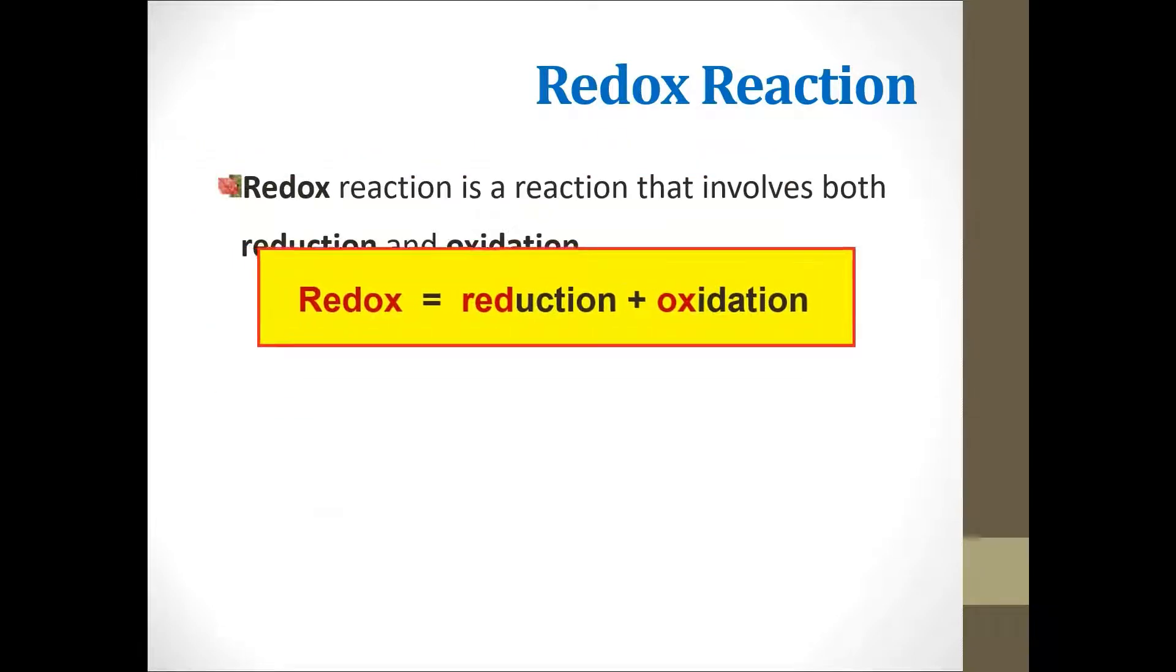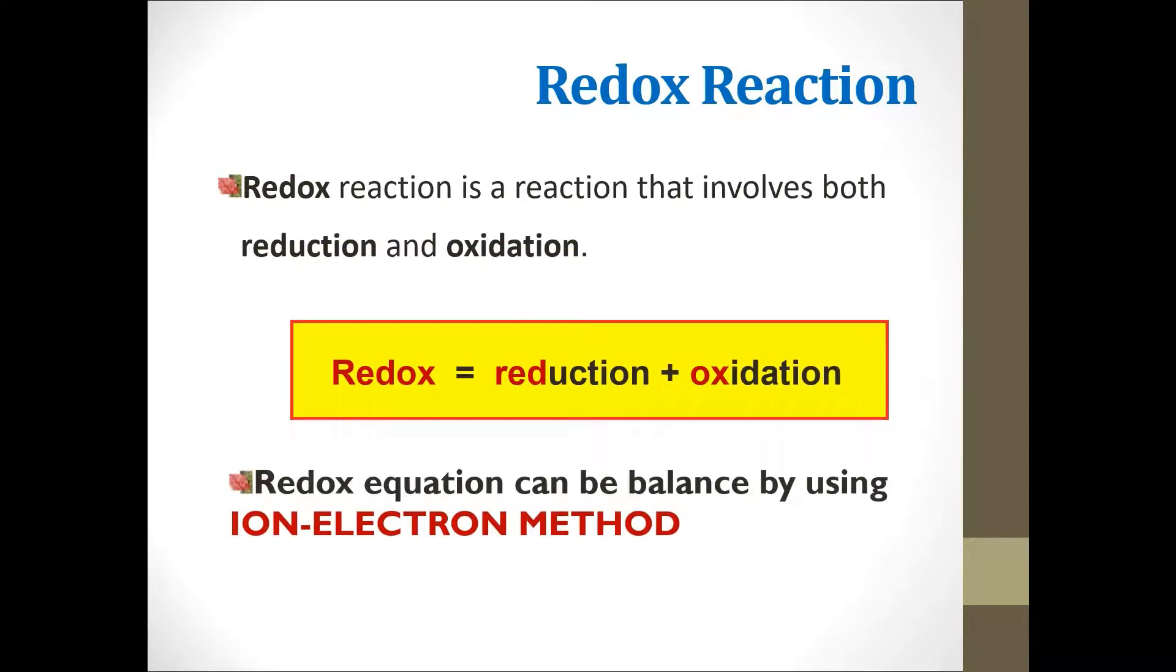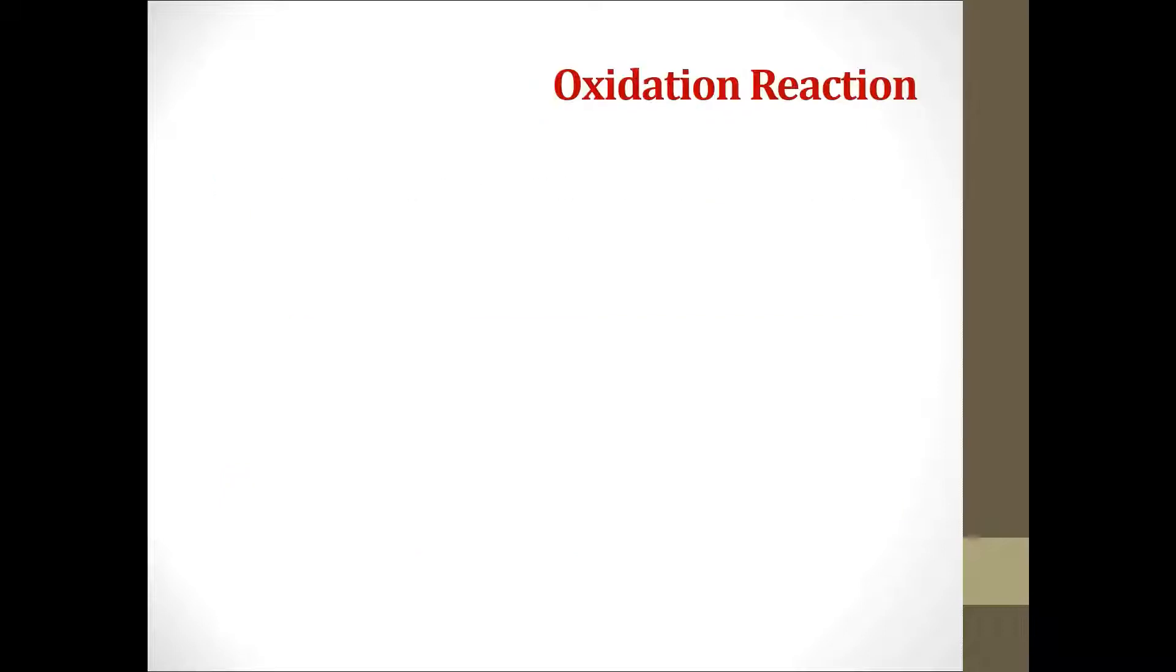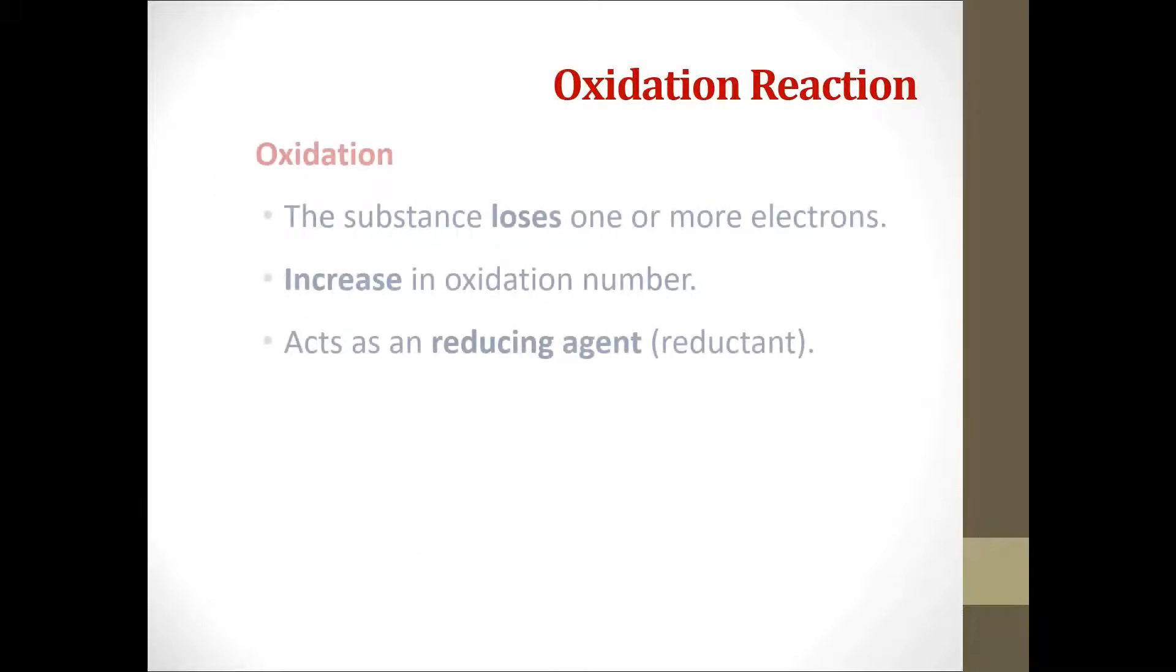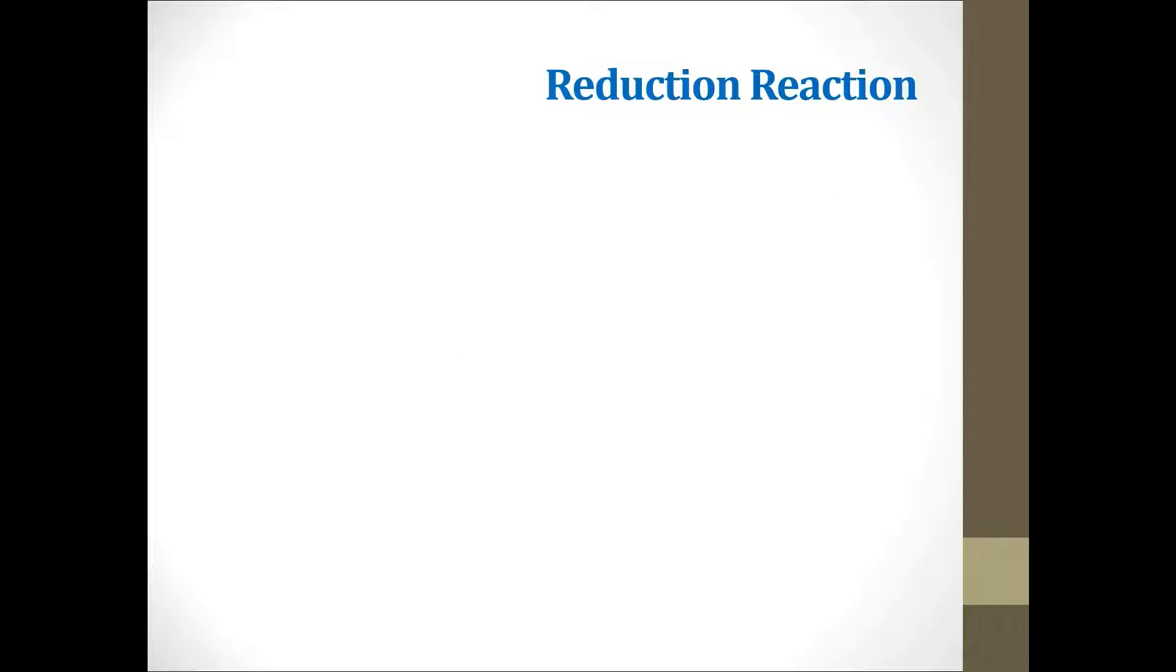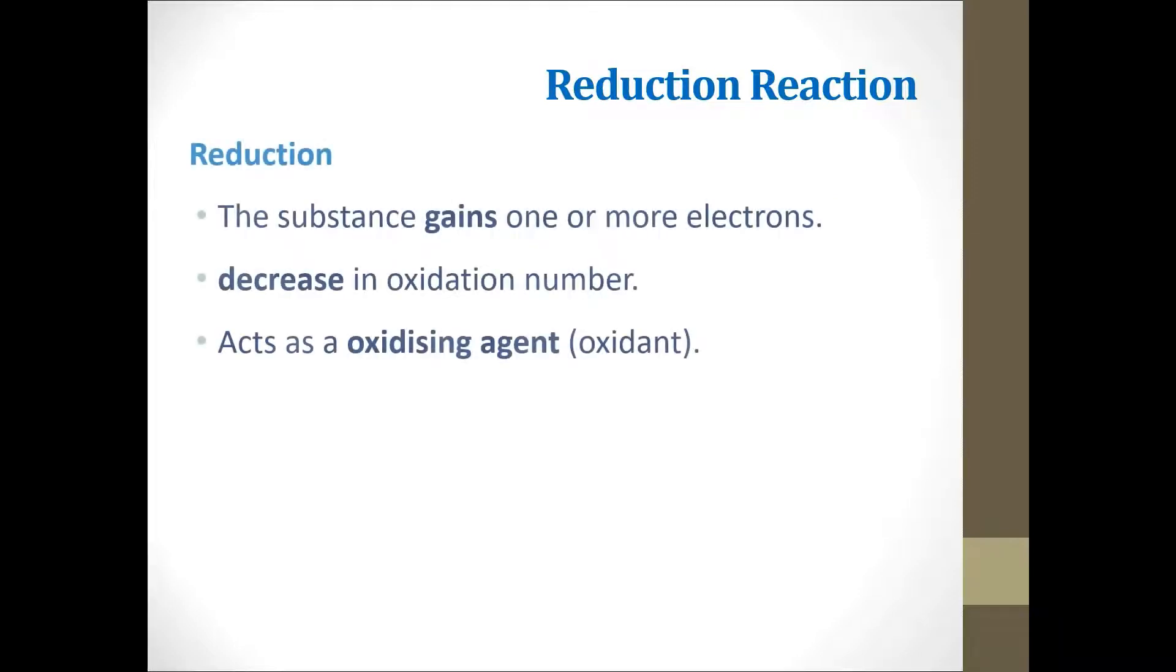The next method that we are going to learn is called the ion-electron method because it involves both reduction and oxidation processes. We know when oxidation reaction happens, there will be an increase in the oxidation number. And when reduction reaction happens, there will be a decrease in the oxidation number.